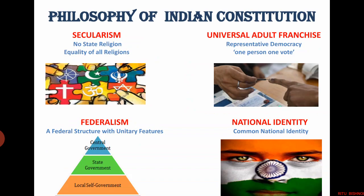Universal adult franchise. Indian democracy functions on the basis of one person, one vote. Every citizen of India who is 18 years of age or above is entitled to vote. The Indian constitution establishes political equality through universal adult franchise.